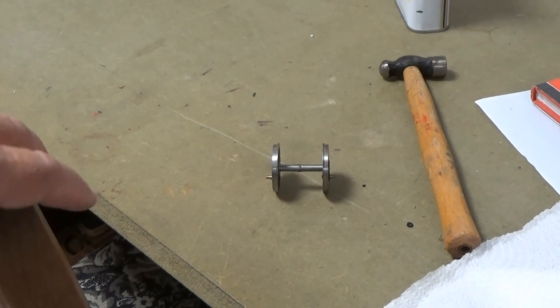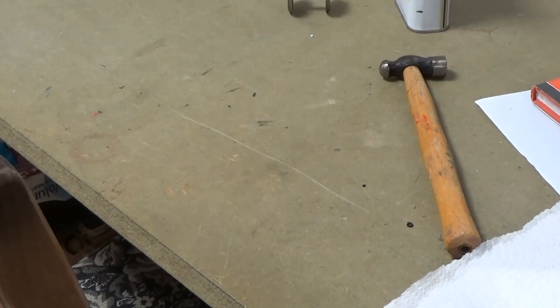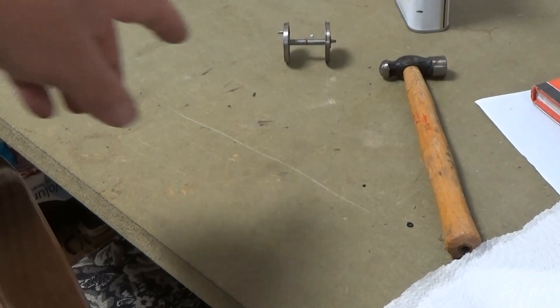And now to demonstrate that the wheels are running true we can simply roll that on the work surface and you can see that it's running nicely.